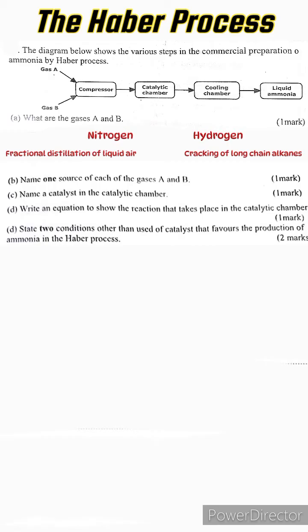Part c: Name a catalyst in the catalytic chamber. The catalyst that is used for this process is finely divided iron. I would like to point out two things: if you would like to go through the questions yourself and try them out, then kindly pause the video and do so. Number two, if you want to revisit any of the concepts of the Haber Process, please check out my video on this and I'm sure it will help you a lot.